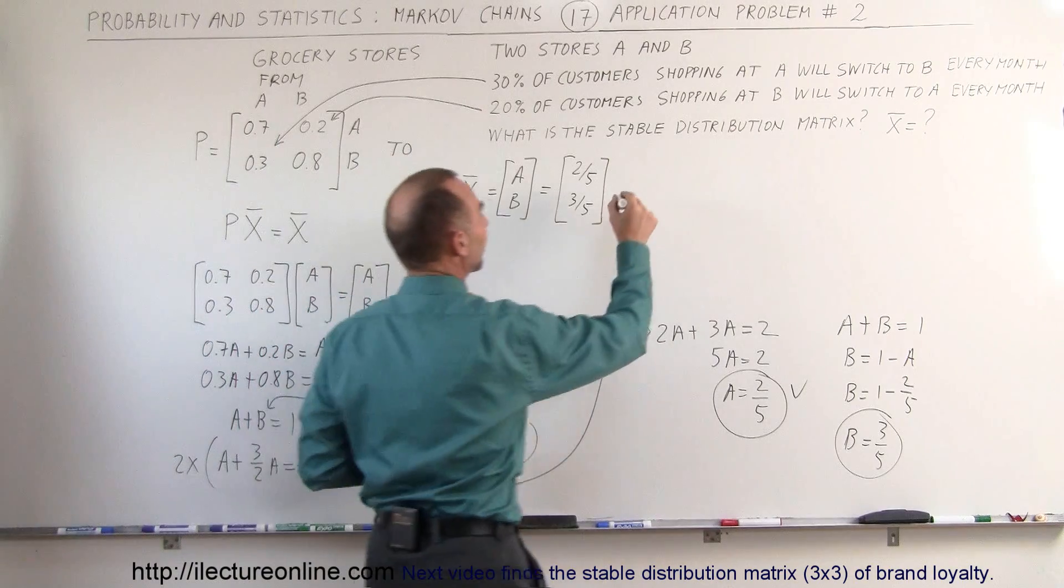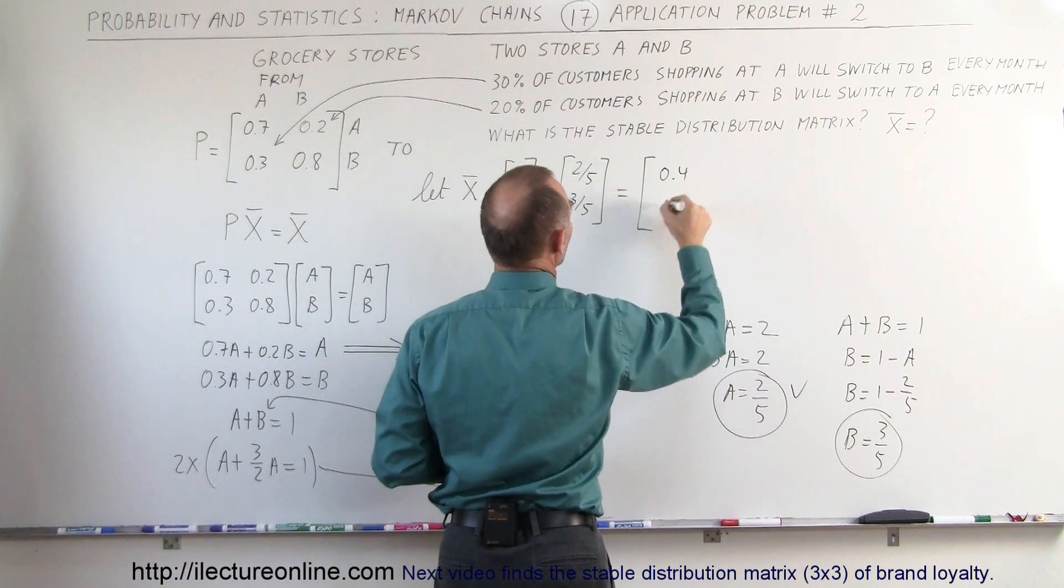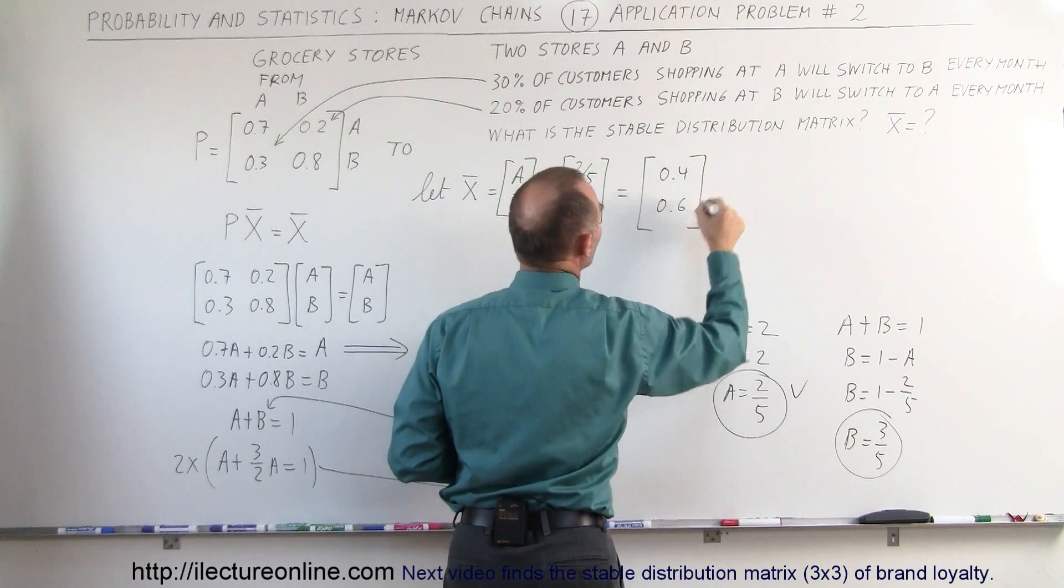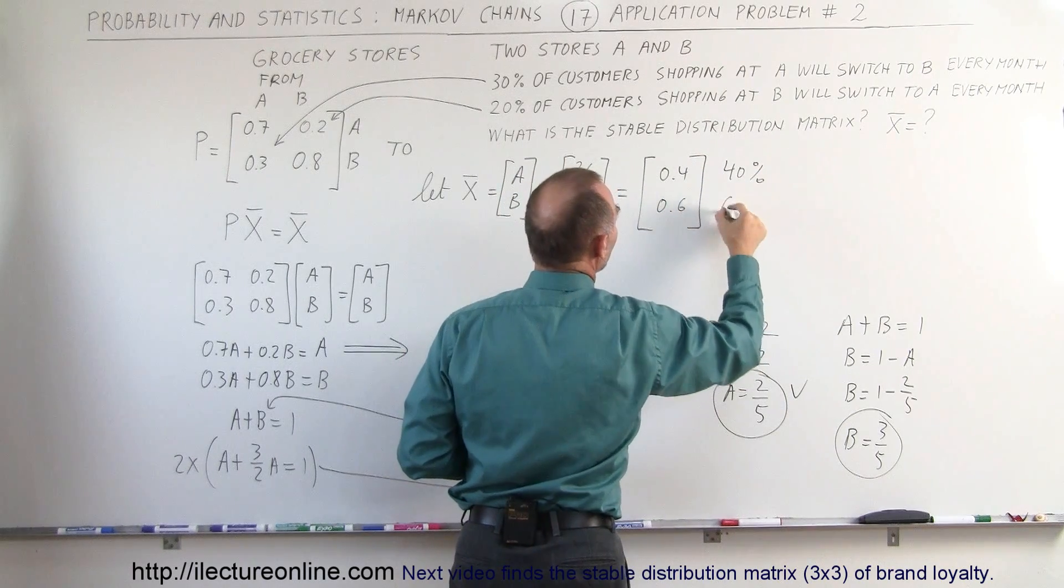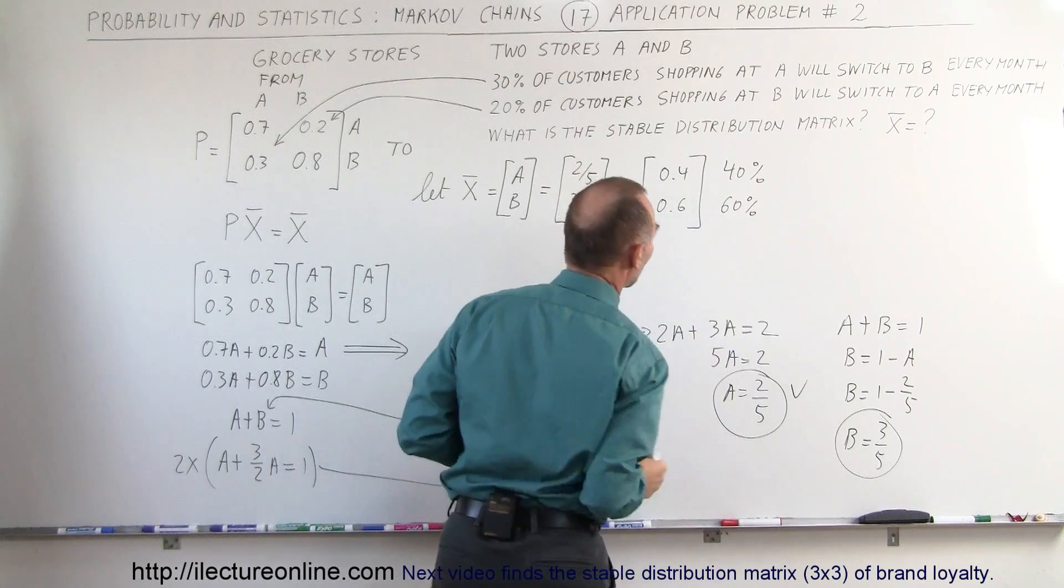So what we can say is that this is equal to 0.4 and 0.6, which means that at the end, 40% of all the people will on average shop at A and 60% of all the people will end up shopping at B.